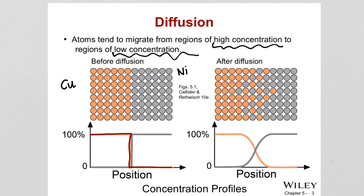After increasing temperature and keeping the diffusion couple at that temperature for a certain period of time, then cooling to room temperature and doing chemical analysis, we see that after diffusion, atoms move toward each other — going from high concentration to low concentration. So copper moves toward the nickel side, and nickel moves toward the copper side.